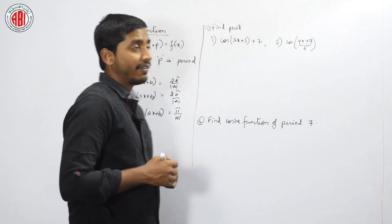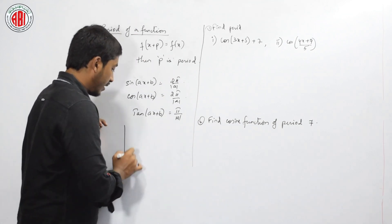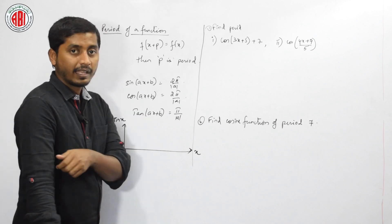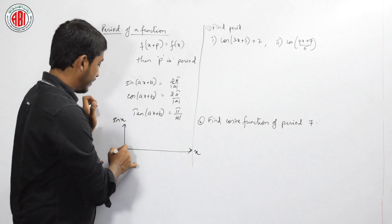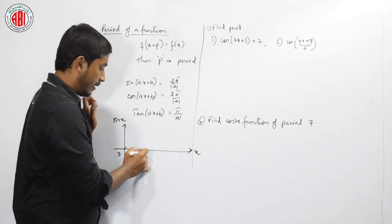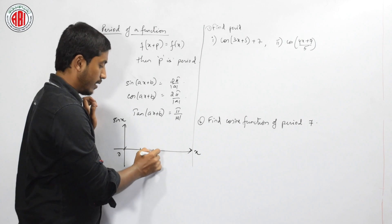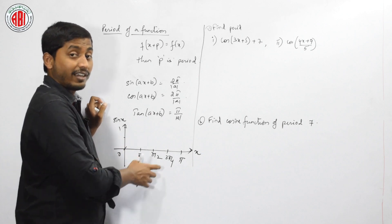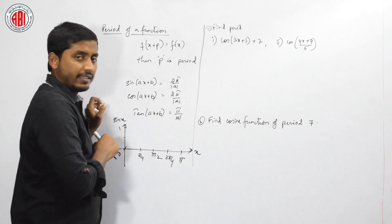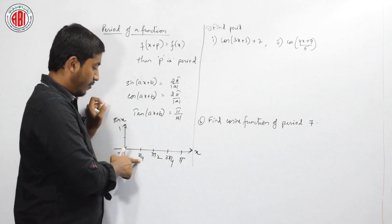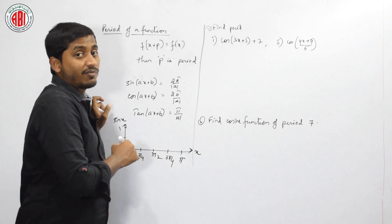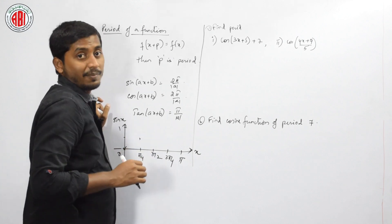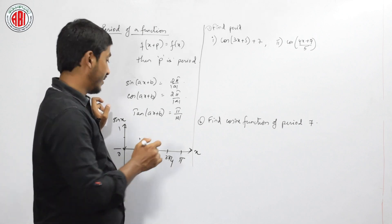Let us have a graph of a sin wave. If this is my x-axis, let us have the graph of sin x. Taking 0 as the starting point, we mark angles: pi by 4, pi by 2. Now let us write the different values of sin at different angles. Sin 0 is 0. Sin pi by 4 is 1 by root 2 — it is somewhere in between. Next is sin pi by 2, which is sin 90 = 1.